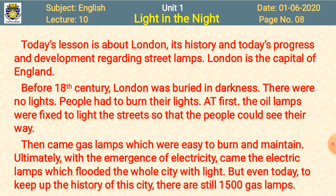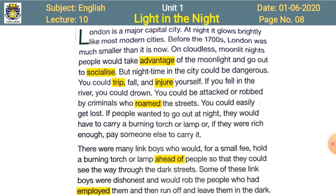Now we start the actual lesson. The name of the lesson is 'Light in the Night'. London is a major capital city. As I told you, Islamabad is the capital of Pakistan and London is the capital of England. At night it glows brightly like most modern cities today — it is one of the most modern cities of the world. There are a lot of lights nowadays. Before the 1700s, London was much smaller than it is now.